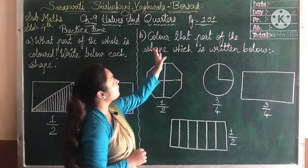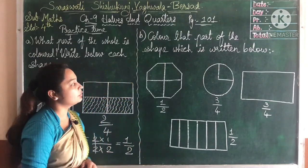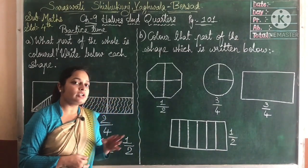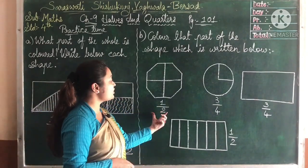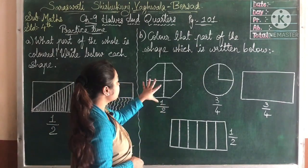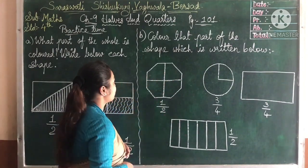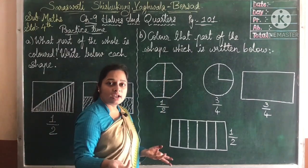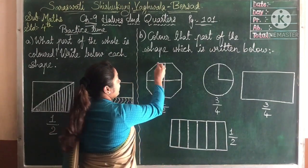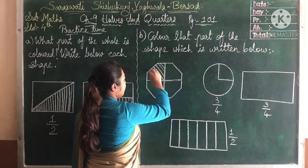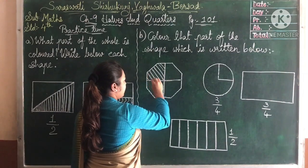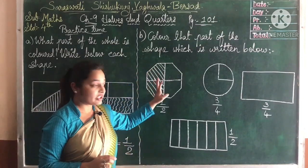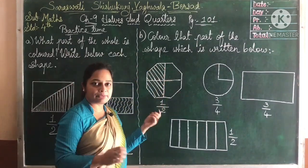The second question is: color the part of the shape as written below. Here you can do the color, or you can shade with pencil also with different patterns. The fraction written is half, so we have to shade half of this shape. If you will see, there are four parts, so from the four, how much we have to shade? Two parts. Two parts are shaded now, so we can get the half fraction like this.